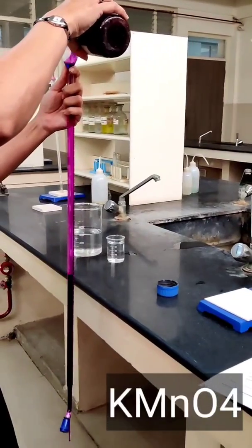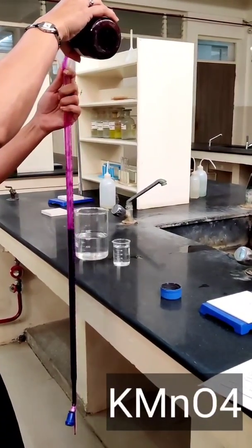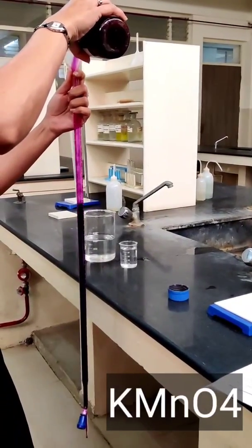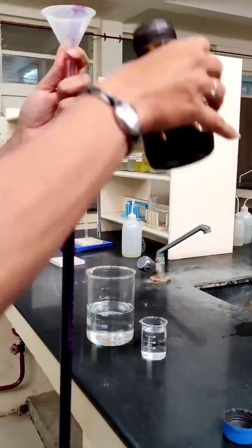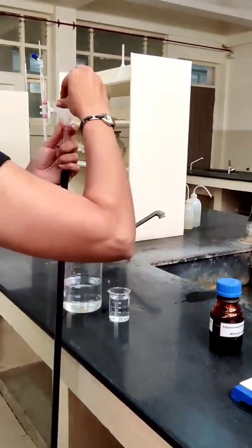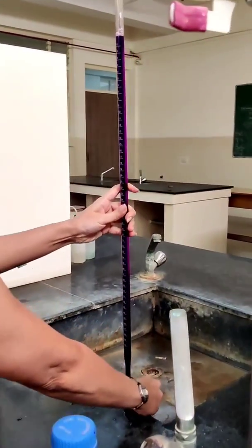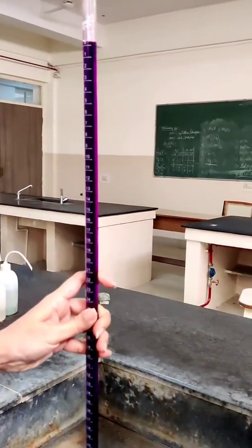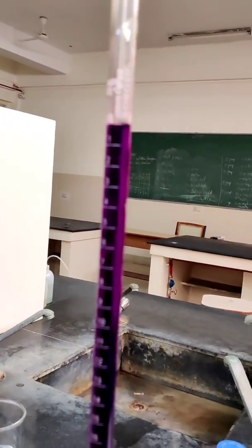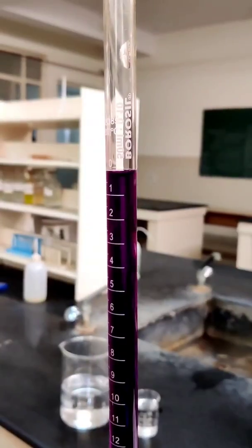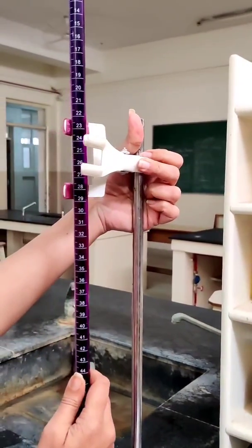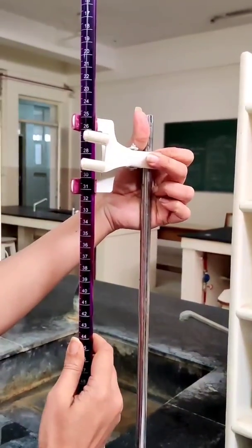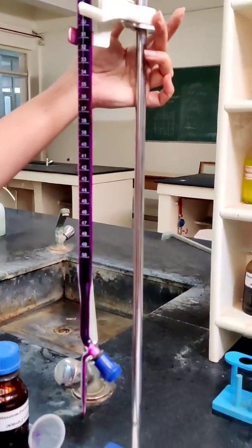Now, I am filling the burette with KMnO4 solution. Note down the initial reading. I have set the initial reading to 0.0. Now, clamp the burette to the stand.